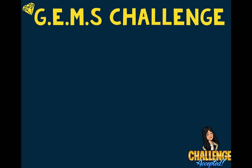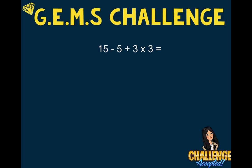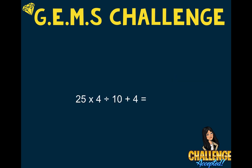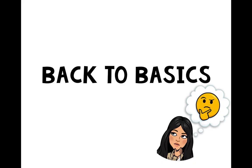Speaking of order of operations, we're going to go back and practice. I'm going to flash a problem on the screen and you are going to press pause, answer it, and then when you press play again I'm going to say the answer. So let's begin. The answers are: 12, 21, 141, 19, 24, 14, 21, and 12. Good job, guys!